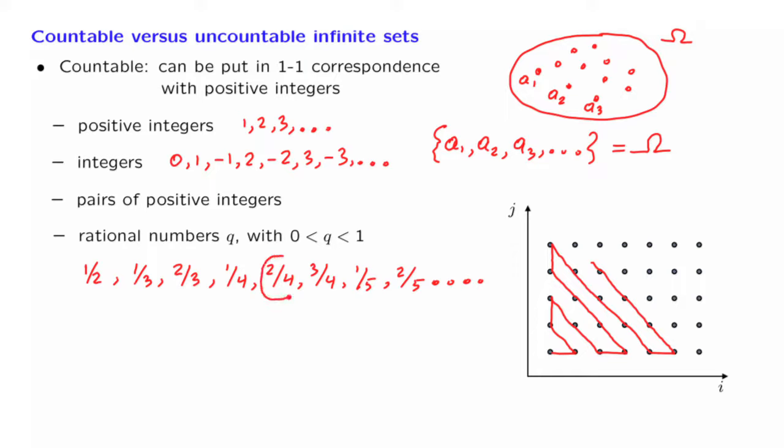Actually, this number here already appeared there. It's the same number. So we do not need to include this in the sequence, but that's not an issue. Whenever we see a rational number that has already been encountered before, we just delete it. In the end, we end up with a sequence that goes over all the possible rational numbers, and so we conclude that the set of all rational numbers is itself a countable set.